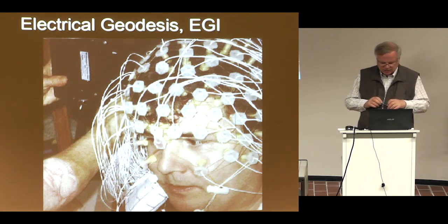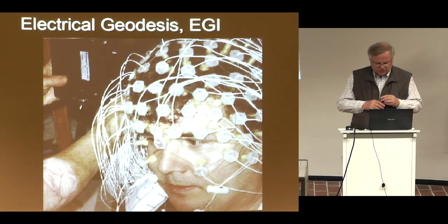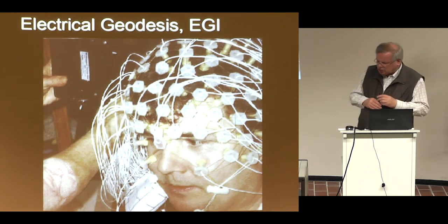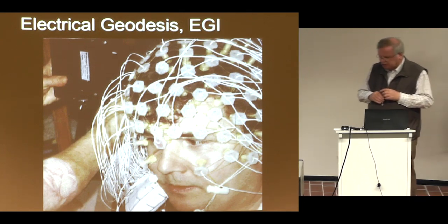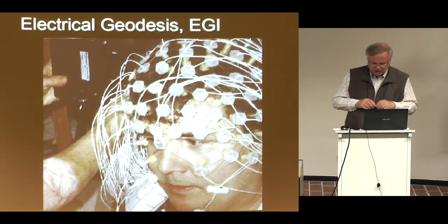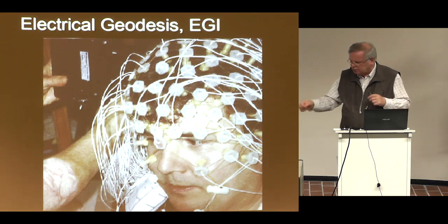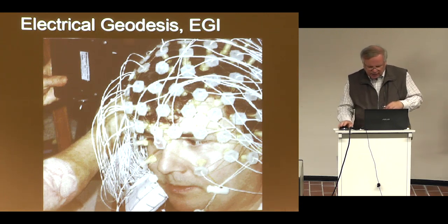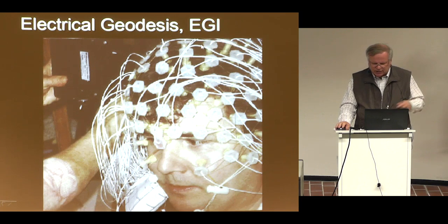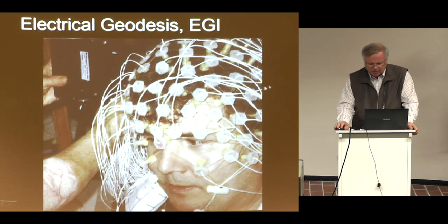What does 'geodesics' mean? The company is in Oregon, United States. Geodesics means the shortest distance between points on a spherical surface, and you see that the stripes connecting the electrodes obey that geodesic geometrical principle.